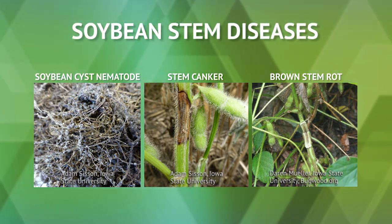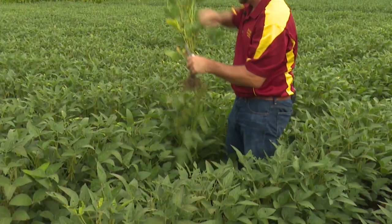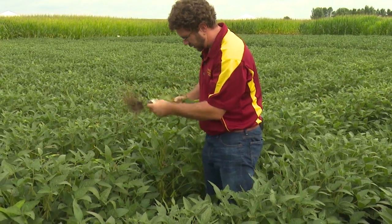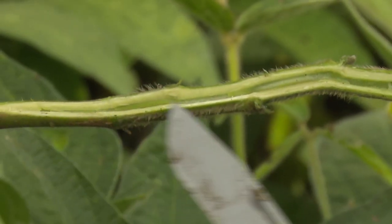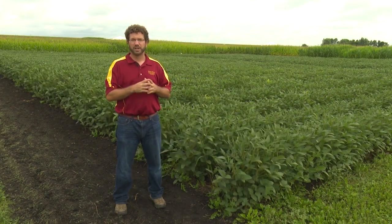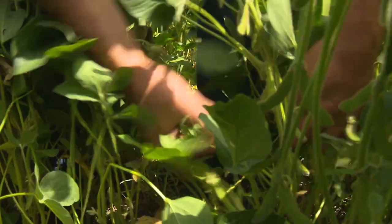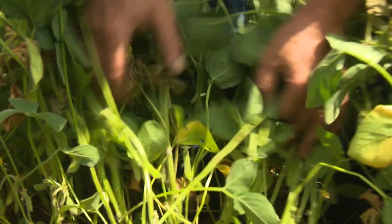Just like with the other group of stem diseases, once you get into that patch you start looking for clues. Grab a couple of stems and start dissecting them — split the stem, look at the inside, and look at the pith. If it's brown, you might have brown stem rot. If the pith is white but there's browning on the outside of the stem, you might have fusarium root rot or sudden death syndrome. Looking at the whole plant, including the roots, can help you distinguish what's causing those yellow patches in the soybean field.